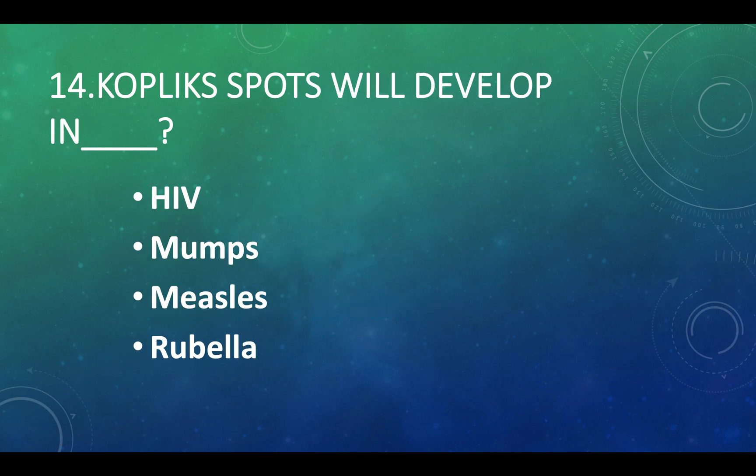Complications will develop in: Option A — HIV, Option B — mumps, Option C — measles, Option D — rubella. Answer: Option C, measles.